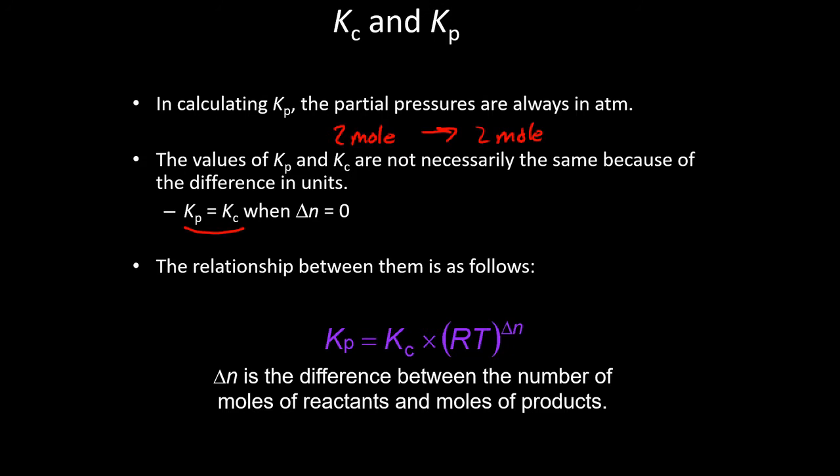Now thankfully, it's not terribly difficult to convert between the two. We'll just use this equation to do that. So what you can see is Kp, the equilibrium constant but with pressures, is equal to Kc, the equilibrium constant with concentrations, times RT raised to the delta N. So R here is just the gas constant, same thing we've seen a thousand times up to this point. T is the temperature in Kelvin, which would have to be in Kelvin to match the gas constant, but that is the temperature. And then delta N is the change in the number of gas molecules.